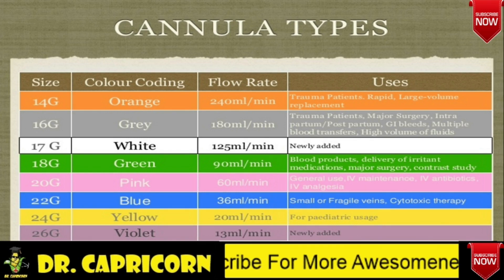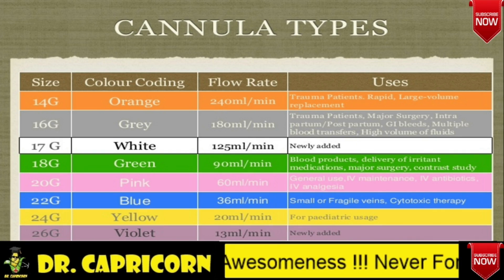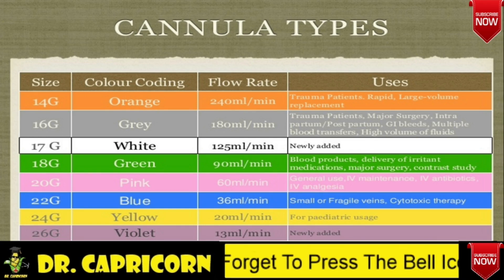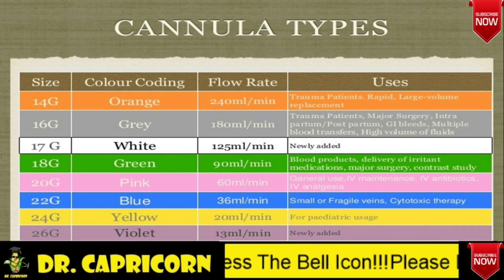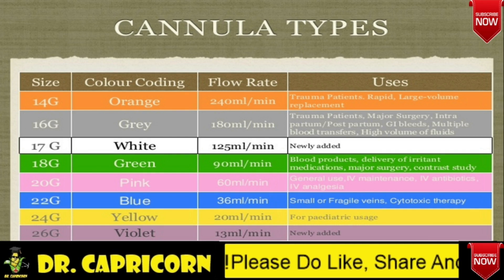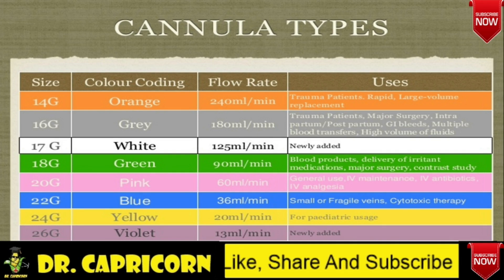14 gauge cannula is wide bore, therefore used in rapid volume replacement as in trauma cases. Gray one is used for major surgeries and multiple blood transfusions. White is newly added and also used for rapid fluid replacement. Green has a flow rate of nearly 100 milliliters per minute and is used in various surgeries and contrast studies to infuse dye. Pink has a flow rate of 60 milliliters per minute, generally used for maintenance line, and antibiotics and analgesics are also injected.